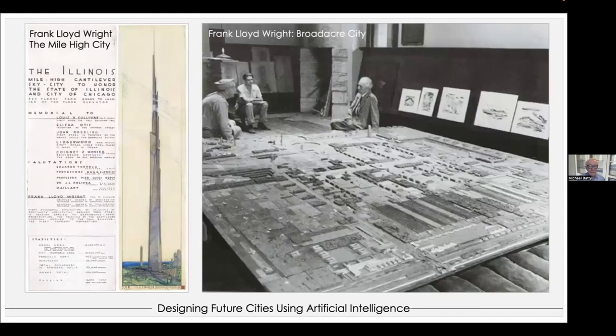Here's another example showing the extremes: Frank Lloyd Wright. The large picture is Broadacre City — essentially classic urban sprawl, from around 1924, around the same time as Le Corbusier. And on the left is another extreme design by Frank Lloyd Wright: the mile-high city called the Illinois. Some say the Burj Khalifa in Dubai, nearly a kilometre high, is modelled after it.